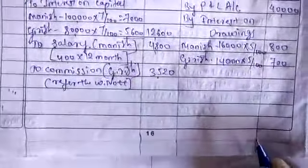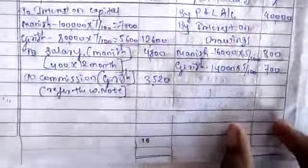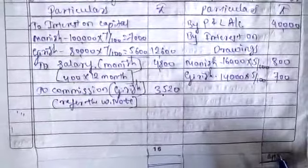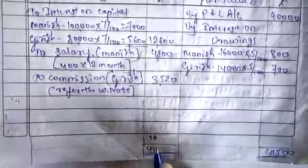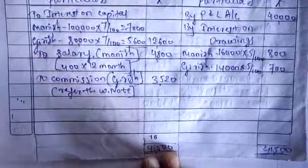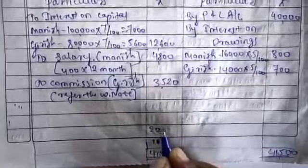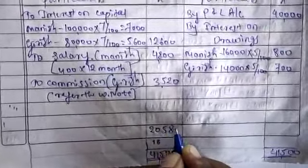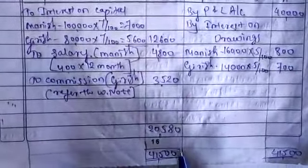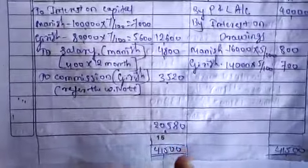Now the closing procedure. The credit side is more than the debit side — incomes are more and expenditures are less. The credit side total is 41,500, which is placed on the debit side of the P&L appropriation account. The difference on the debit side is 20,580, and since incomes are more than expenditure, this difference amount is called profit.